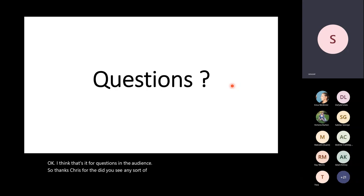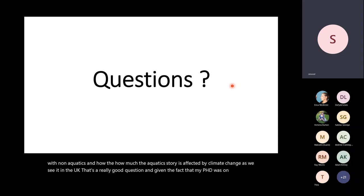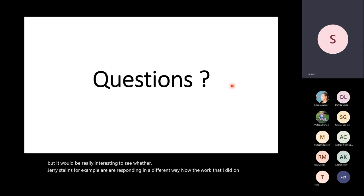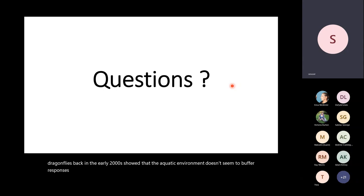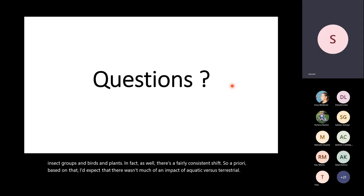Q: Did you see any fine-grained data on differences between Syrphidae with aquatic larvae compared with non-aquatics, and how the aquatic story is affected by climate change in the UK? A: That's a really good question, and given that my PhD was on dragonflies and responses to climate change, I should have looked at this already. My early 2000s work on dragonflies showed that the aquatic environment doesn't seem to buffer responses to climate — aquatic odonate nymphs go through their phenological patterns in much the same way as terrestrial insect groups, birds, and plants. So a priori I'd expect aquatic versus terrestrial life histories don't differ much, but it's not something I've looked at specifically for Syrphidae.